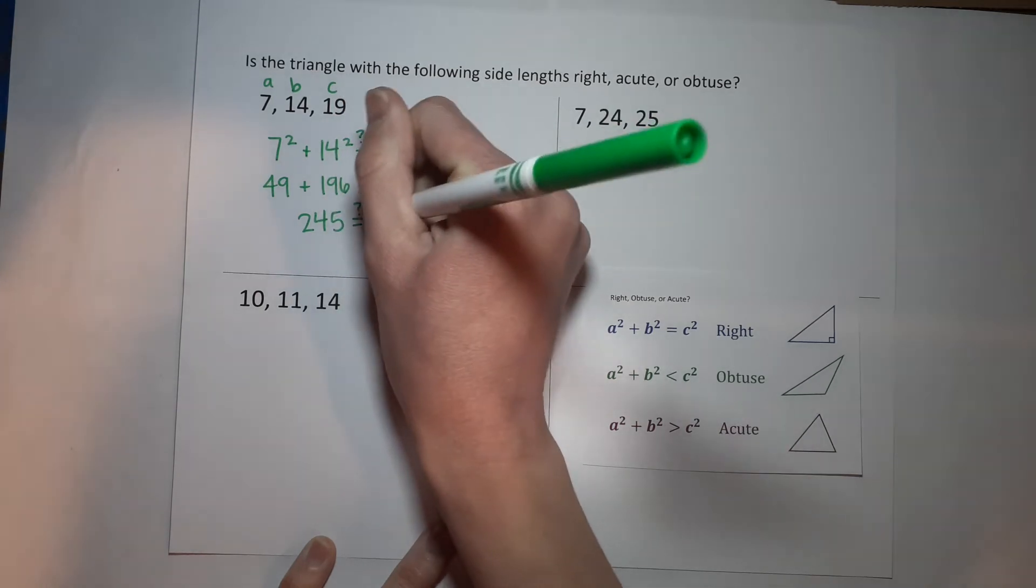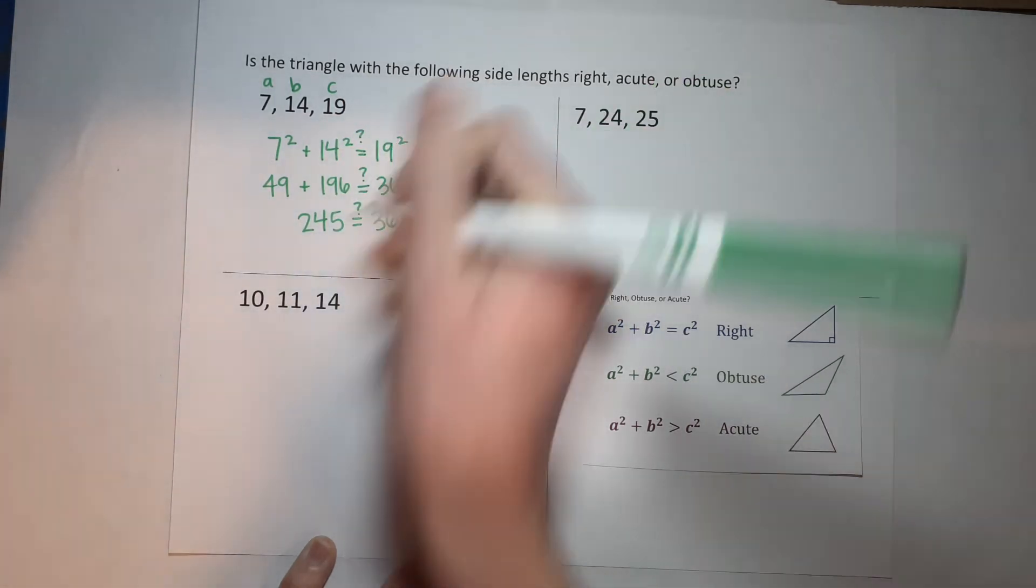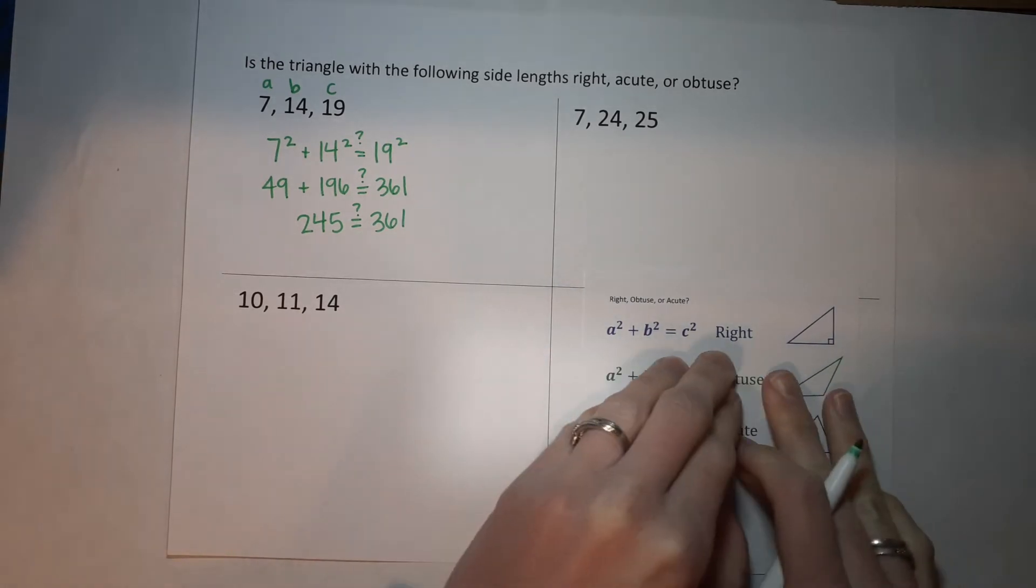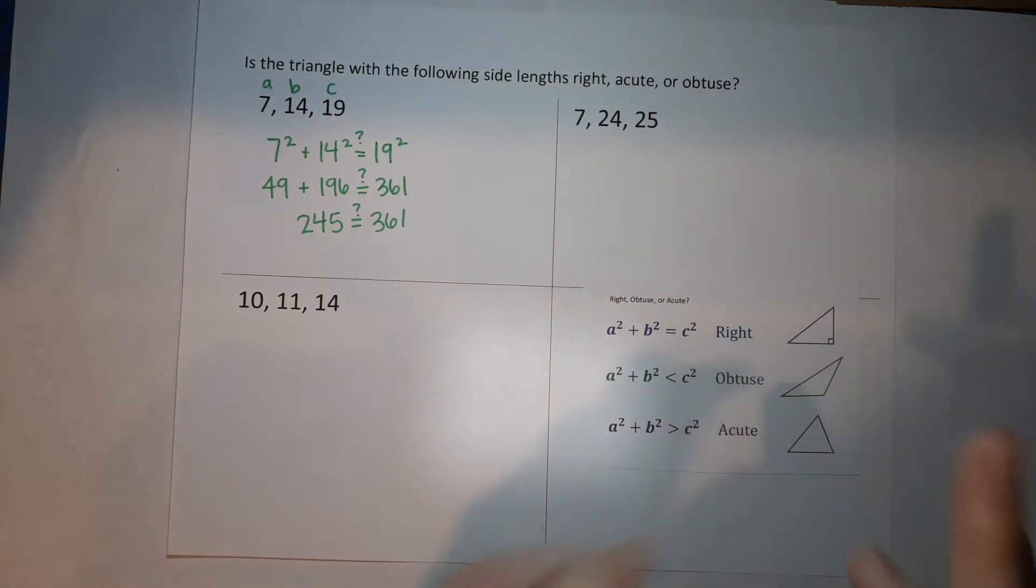Ooh, that's not looking equal to 361, right? So what that tells us is it is not a right triangle. Now is it obtuse or acute?